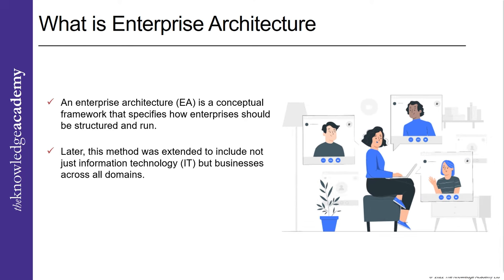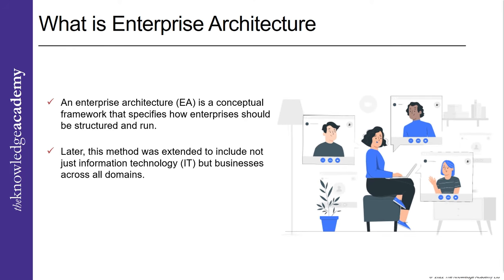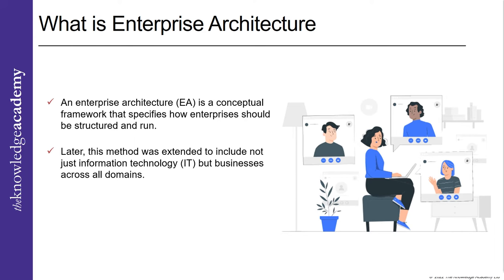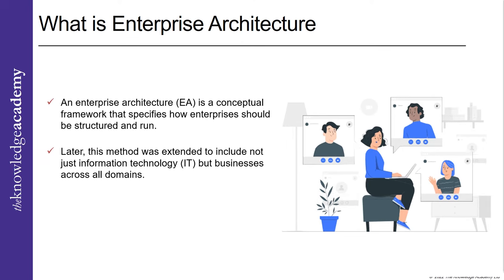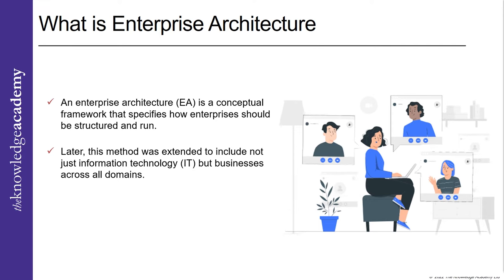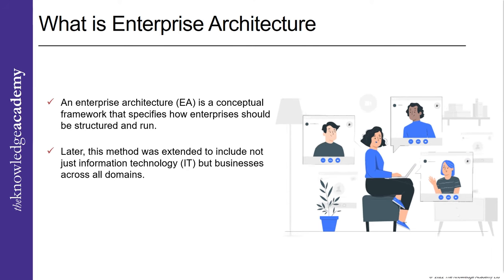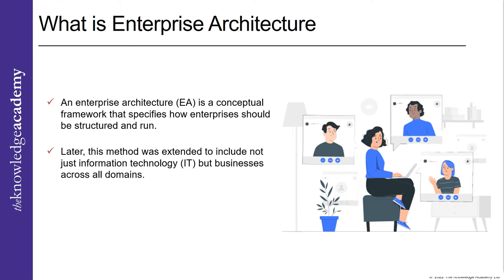In the 1980s, as business technologies advanced and the need to adapt to rapid technological change became crucial to company strategy, the use of EA frameworks increased. Later, this method was extended to include not just information technology but the business across all domains. The EA focuses on bringing legacy systems and processes together to create a seamless environment, which is helpful for firms going through digital transformation, technology upgrades, and business process adjustments.